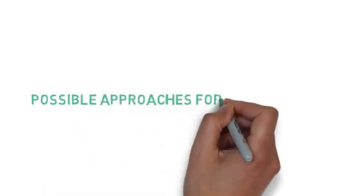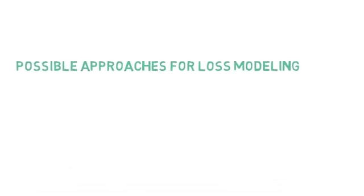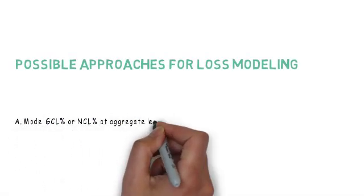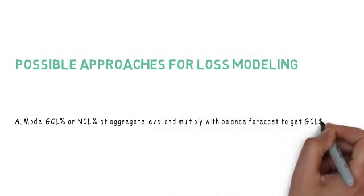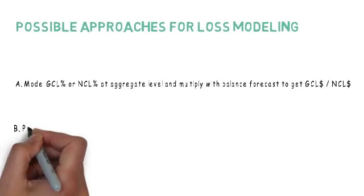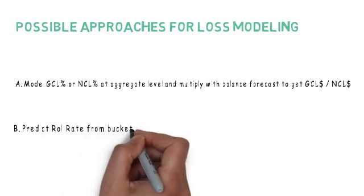There are a lot of approaches which can be used to predict credit loss. Here we will talk about some very common approaches. The most basic approach is to predict GCL rate or NCL rate at a portfolio or a segment level. We can use simple time series modeling to predict these rates.